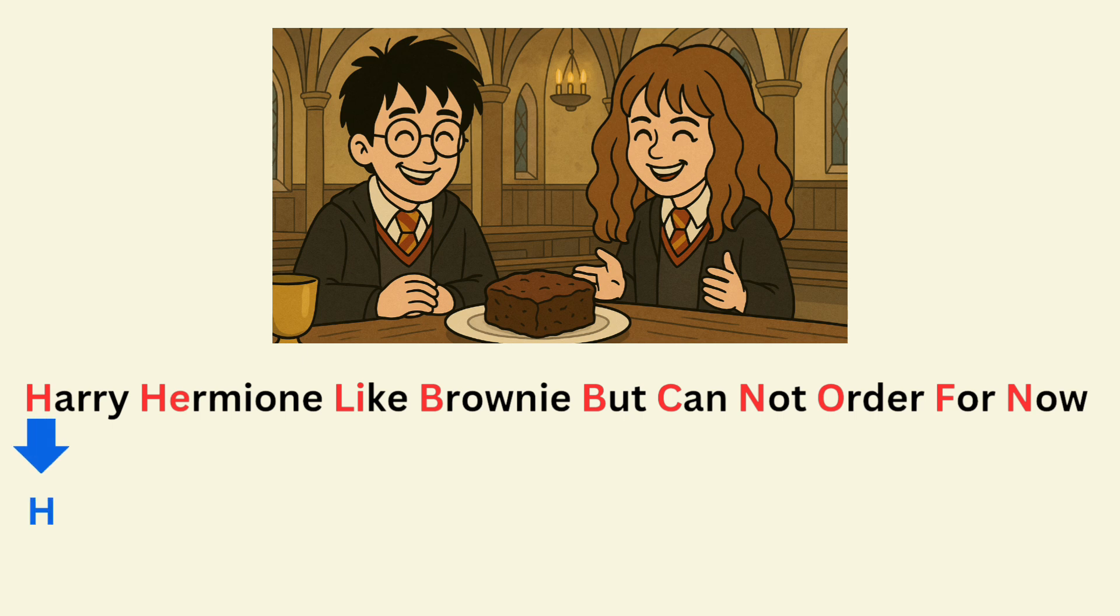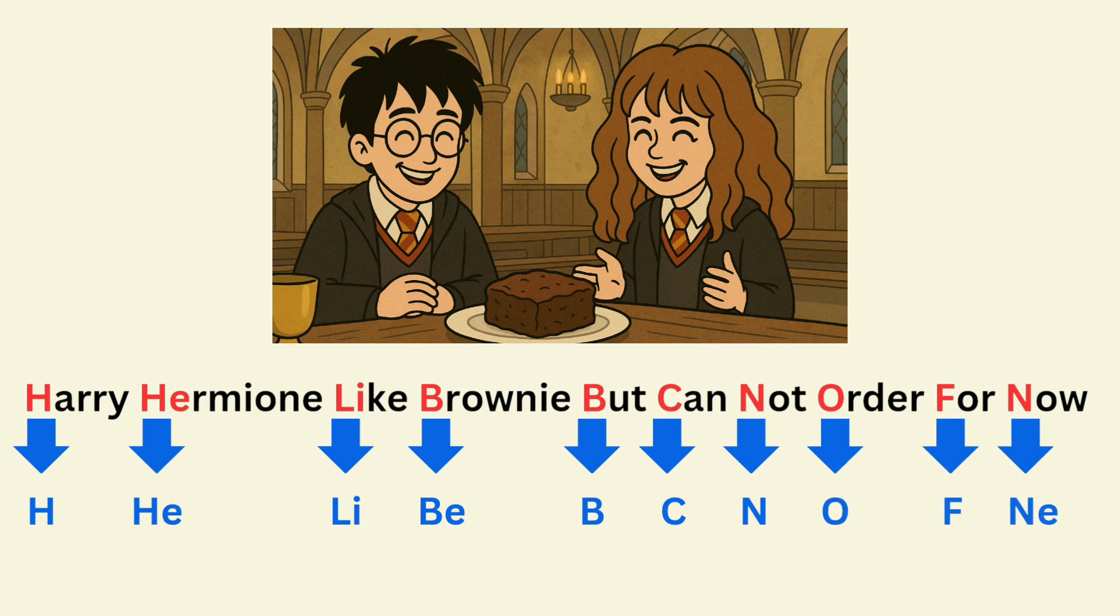Here, H stands for Hydrogen. He stands for Helium. Li stands for Lithium. B stands for Beryllium. B stands for Boron. C stands for Carbon. N stands for Nitrogen. O stands for Oxygen. F stands for Fluorine. N stands for Neon. This is the first 10 elements of the periodic table. Now we move for the next story.